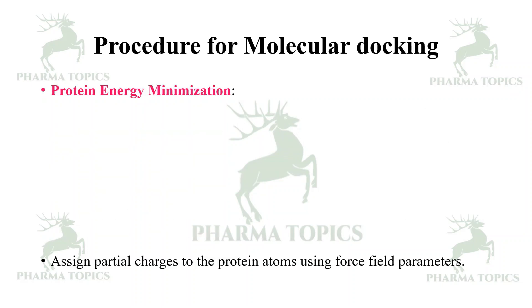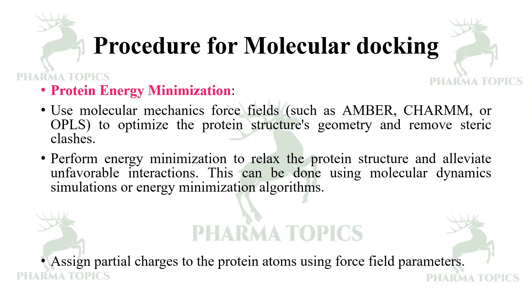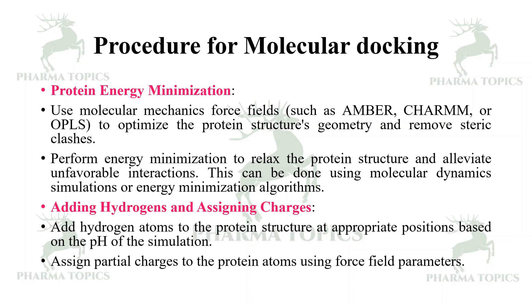Check for missing atoms or residues and fill the gaps using structure prediction tools if necessary. Next, perform protein energy minimization using molecular mechanics force fields such as AMBER, CHARMM, or OPLS to optimize the protein structure's geometry and relieve steric clashes. Perform energy minimization to relax the protein structure and alleviate unfavorable interactions using molecular dynamic simulations or energy minimization algorithms.